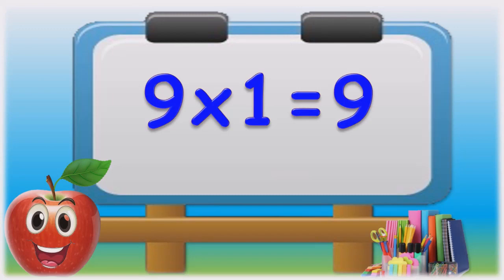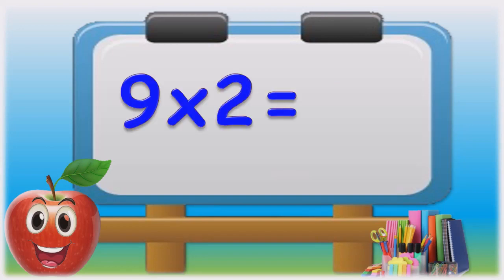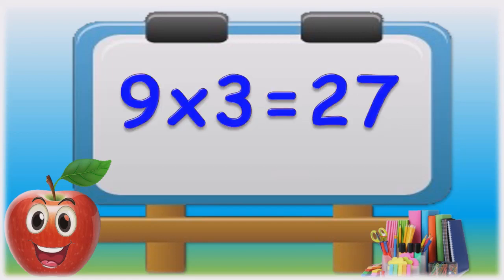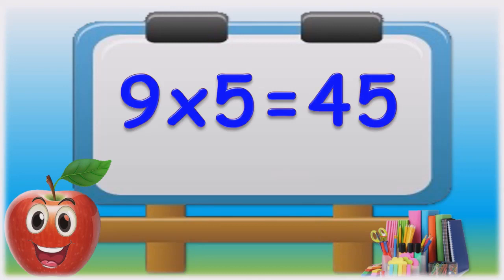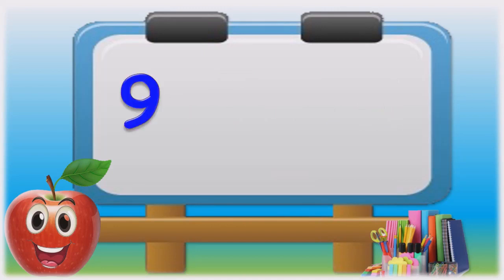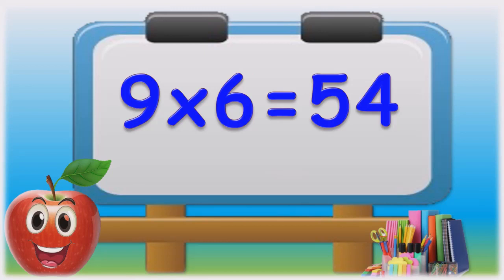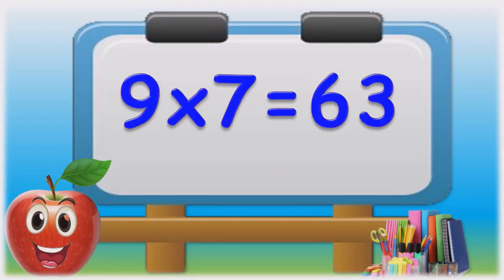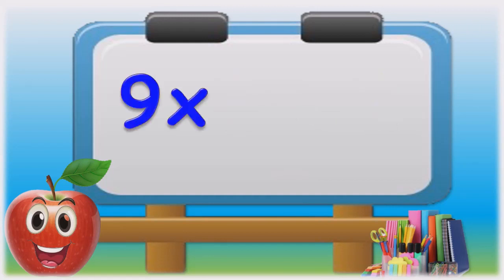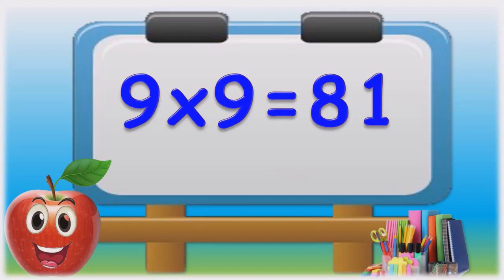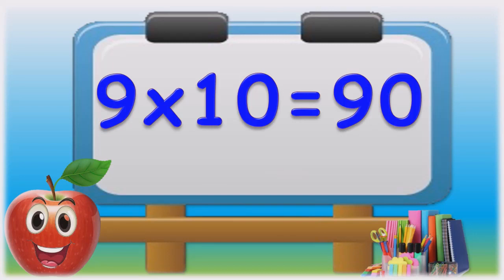Nine ones are nine. Nine twos are eighteen. Nine threes are twenty-seven. Nine fours are thirty-six. Nine fives are forty-five. Nine sixes are fifty-four. Nine sevens are sixty-three. Nine eights are seventy-two. Nine nines are eighty-one. Nine tens are ninety.